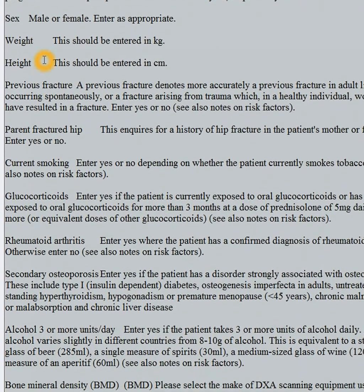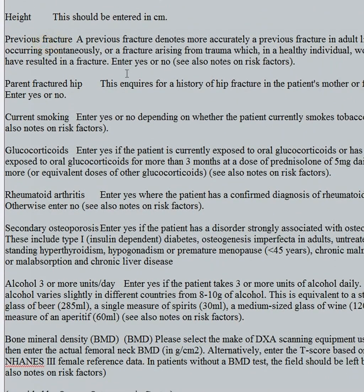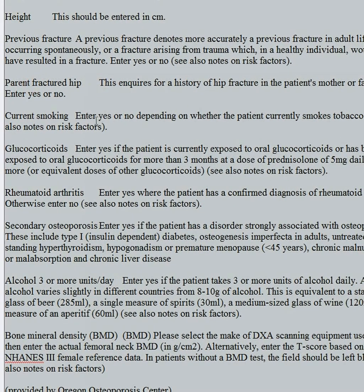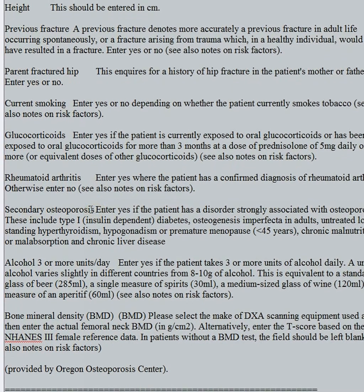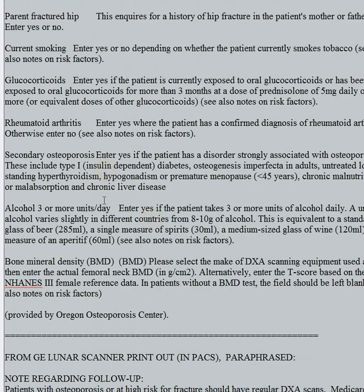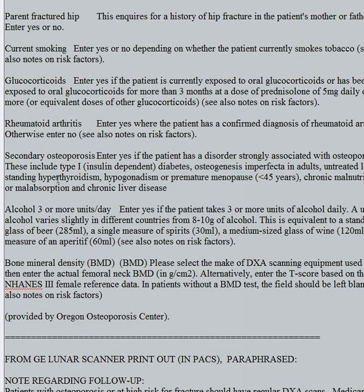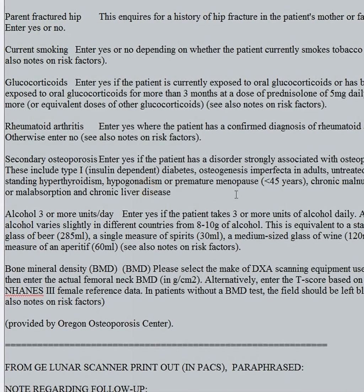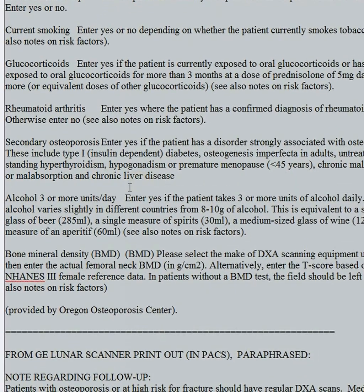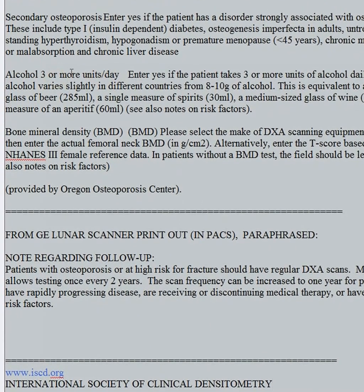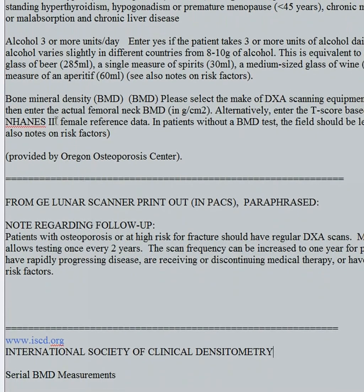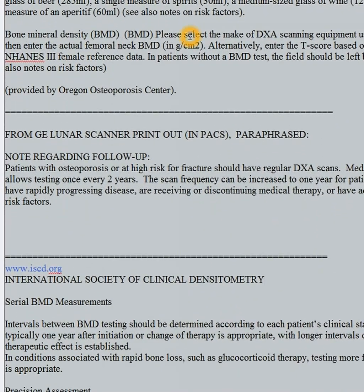Being very thin is a risk factor. A previous personal fracture is a risk factor. A family history of fracture. Current smoking. Steroid use — must be at least three months duration. Rheumatoid arthritis. Other risk factors for secondary osteoporosis like diabetes, osteogenesis imperfecta, hyperthyroidism, hypogonadism, malnutrition, liver disease, malabsorption, and alcohol use of three or more units per day — so three drinks a day is a risk factor. That covers the FRAX calculator risk factors.